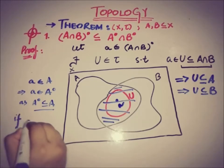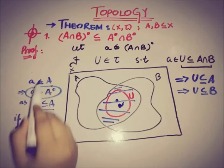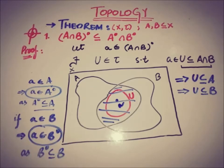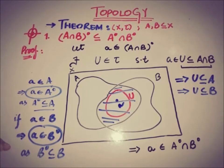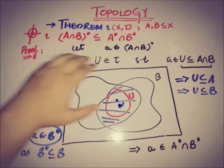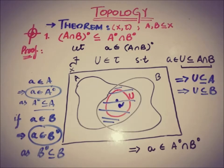Similarly, since 'a' belongs to B via the open set U, this implies 'a' also belongs to Int(B), because Int(B) is a subset of B. So 'a' belongs to Int(A) and 'a' belongs to Int(B), which together tell us that 'a' is a member of Int(A) ∩ Int(B). We have proved that Int(A ∩ B) is a subset of Int(A) ∩ Int(B).